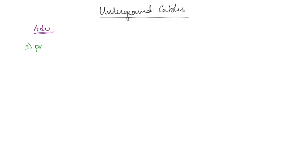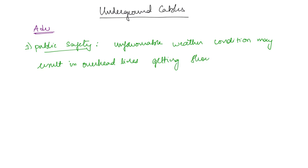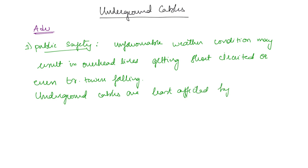The first advantage is public safety. In case of rains or huge storms, overhead lines may get cut off, short circuited, or the transmission towers may fall. Underground cables are least affected by such unfavorable weather conditions.